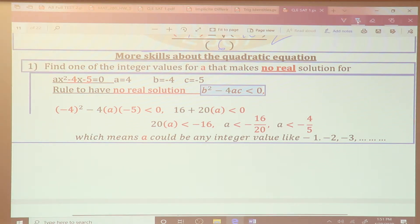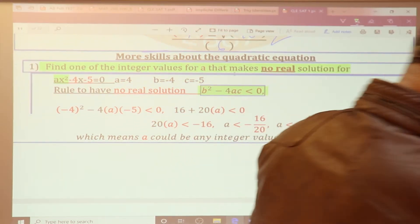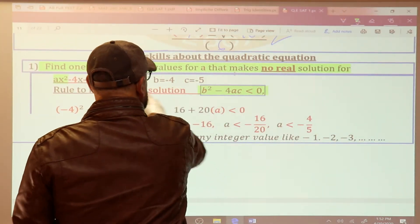Now we are at this point: more skills about quadratic equation. One of the most important skills is he will ask you find the value of A or B to have no real solution. Since he said no real solution, that means the discriminant here must be less than zero. As an example, this is an example. He said find the value of A where A with x squared to have no real solution. Then step one, what you do: you find what A, what B, what C.